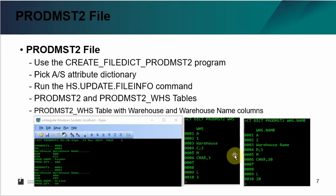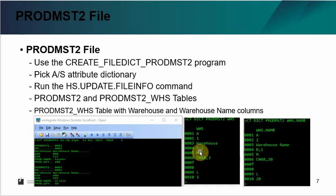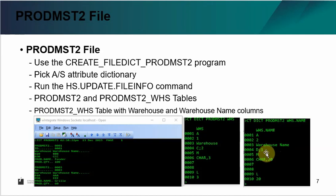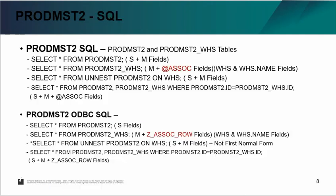The second example is called prod_MST2, which is a little different from the previous one because it has an association. In this demo, the WHS field is field one and WH_name is field two. They use an S-type dictionary field — it is actually attribute number four. C is the control field name. The association shows the mother-value table called WHS, and the dependent field D maps back to field one, making it a control field called WHS_name.